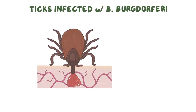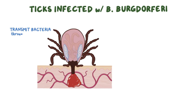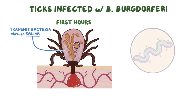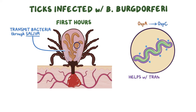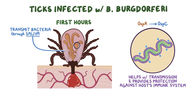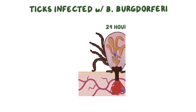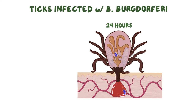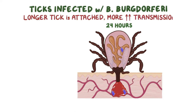A tick infected with B. burgdorferi can transmit the bacteria to humans and animals through their saliva during feeding. In the first few hours after attachment, the bacteria in the tick's midgut switch their outer surface protein from OSP-A to OSP-C, which helps with transmission and provides protection against the host's immune system. The longer a tick is attached, the more likely transmission will occur.